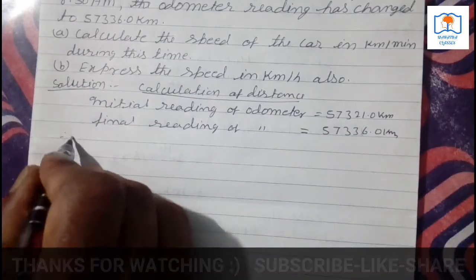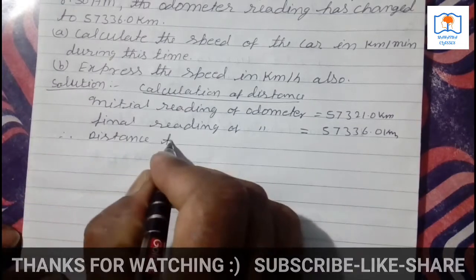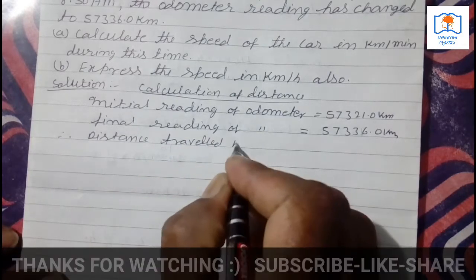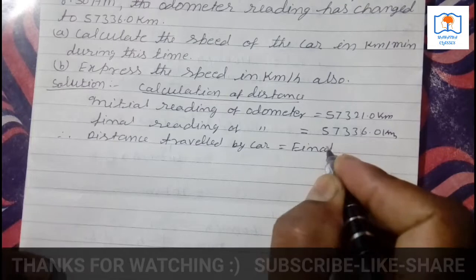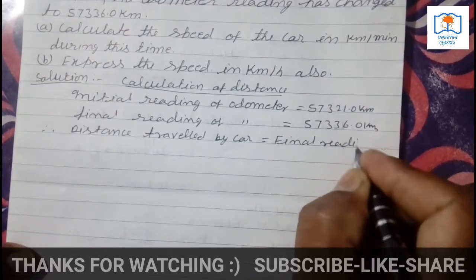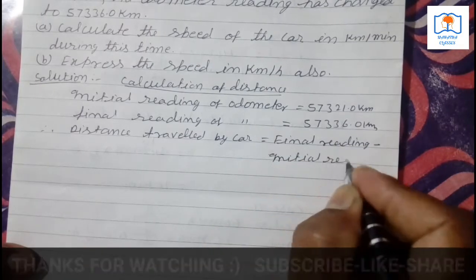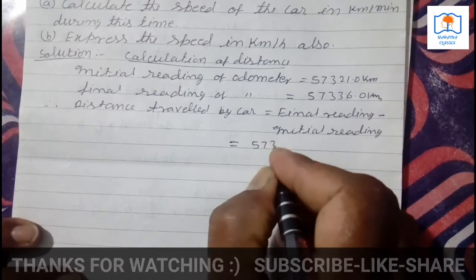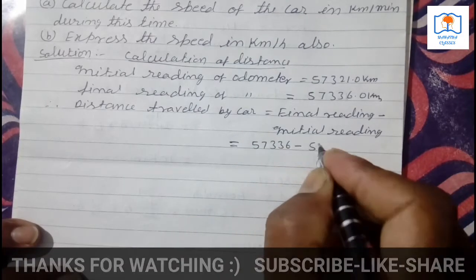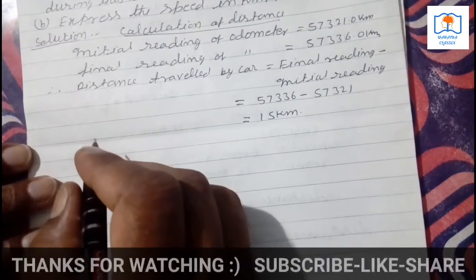Now, distance traveled by the car equals the final odometer reading minus the initial reading. That is 57,336 minus 57,321, which gives us 15 km. So the car traveled 15 km.